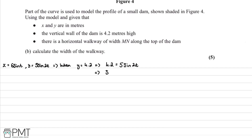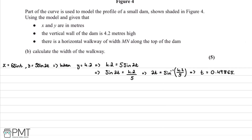Setting y = 4.2: we have 4.2 = 5 sin(2t), so sin(2t) = 4.2/5. Therefore 2t = sin⁻¹(4.2/5), and t = sin⁻¹(4.2/5) / 2. Entering this into a calculator gives t₁ ≈ 0.49865 radians.